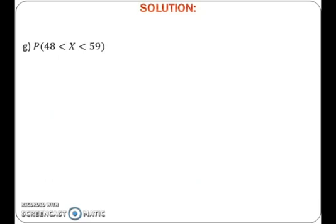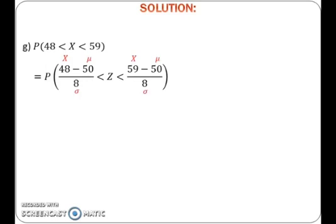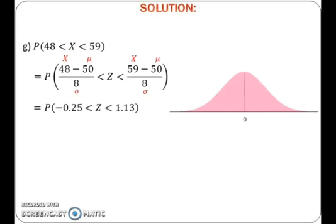To find probability of x between 48 and 59, first change normal distribution to standard normal distribution by using formula x minus mu over sigma. Here we get probability of x between 48 and 59 equals to probability of z between negative 0.25 and positive 1.13. After that, draw a bell-shaped graph with zero at the center. Plot negative 0.25 and positive 1.13 on the graph, draw two vertical lines and shade the region of probability that we want to find. Because we want to find probability of z between negative 0.25 and positive 1.13, the region would be in between negative 0.25 and positive 1.13.